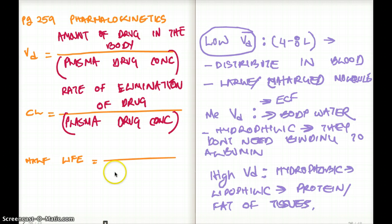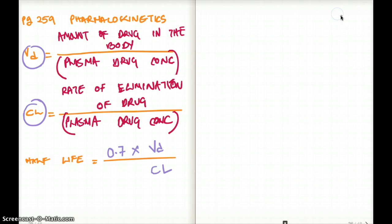Next, we have half-life. For half-life, we have 0.7 times VD by CL. That's the equation. You take VD by CL. For half-lives, usually for a particular drug to reach steady state, it has to go about four to five half-lives for it to reach steady state.